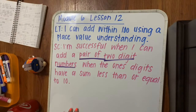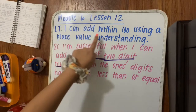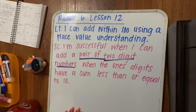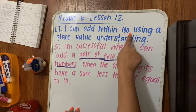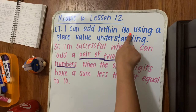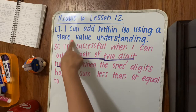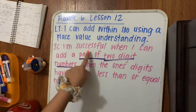For our learning target today it says: I can add within 100 using a place value understanding. So today we're going to be focusing on adding, and our answers are going to be anything up to 100 — so anything 100 or less. Place value understanding means we're still working with our tens and ones.